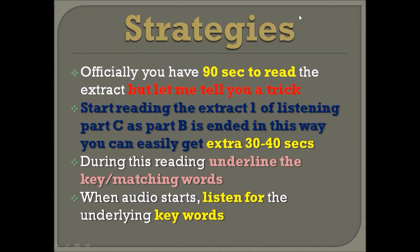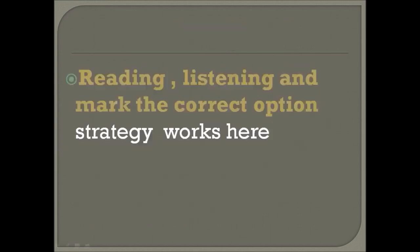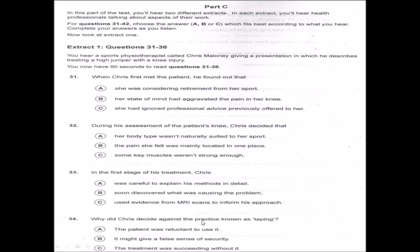For OET listening part C strategies: officially you have 90 seconds to read each extract. But here is the same trick as in part A — start reading extract one of listening part C as soon as part B ends. In this way you can get an extra 30 to 40 seconds. As soon as part B ends, move directly to extract one, start reading, and underline the important words in the questions and answer options.